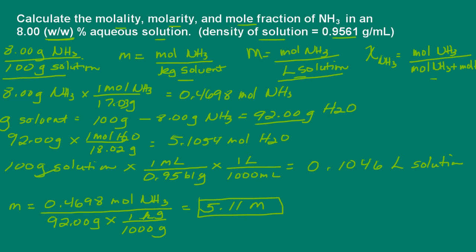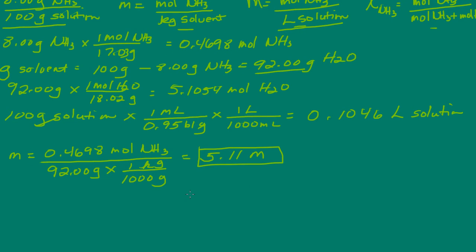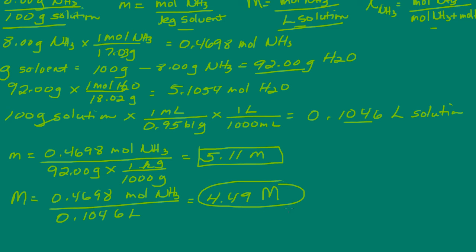Okay. Let's calculate our molarity. And the molarity will be the moles of ammonia divided by the volume of the solution. So we determined the volume of solution right here. And that's 0.1046 liters. Remember, molarity is a capital M and molality is the lowercase m. So we have our molarity.